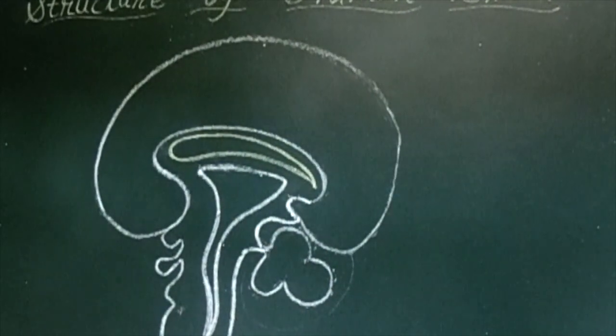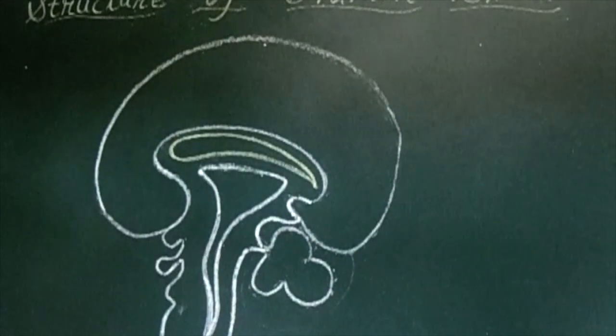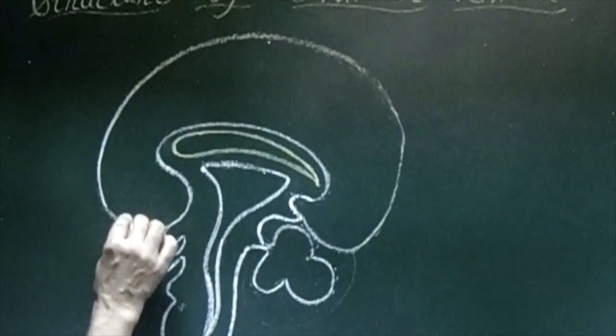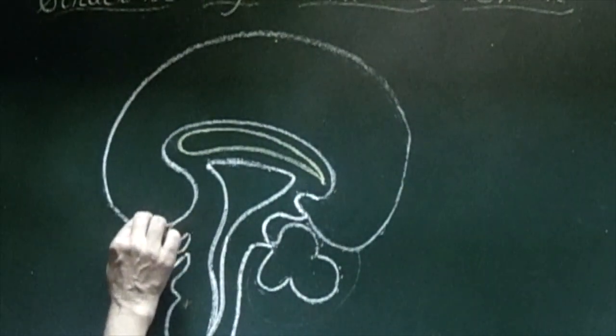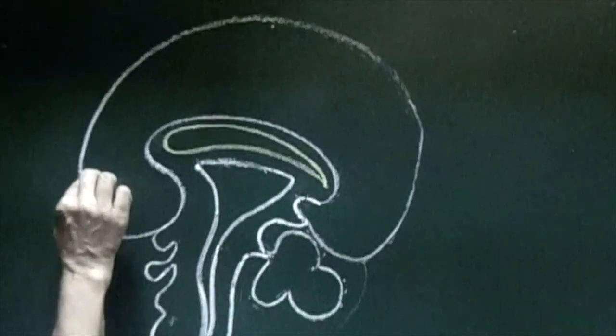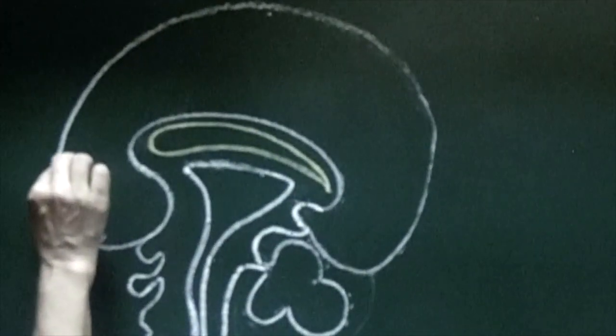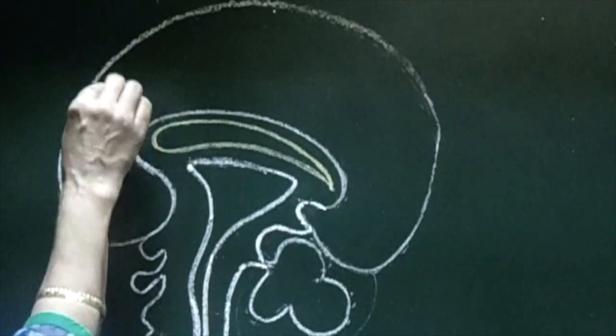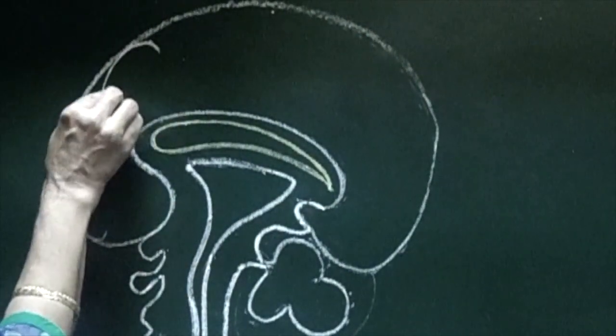Now what we will be doing, we will draw the structure that is the forebrain, cerebrum. Now to draw the cerebrum, you have to come from here. Like this. Go in this way. Come it. It's very simple.